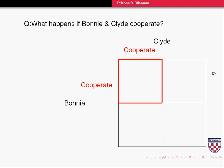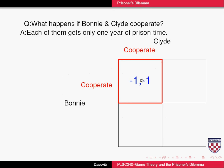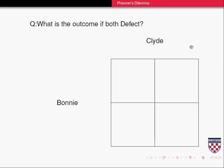What happens if Bonnie and Clyde cooperate? Well, if they both cooperate, as the fable suggests, they'll each get one year in jail, which is not great but not terrible.